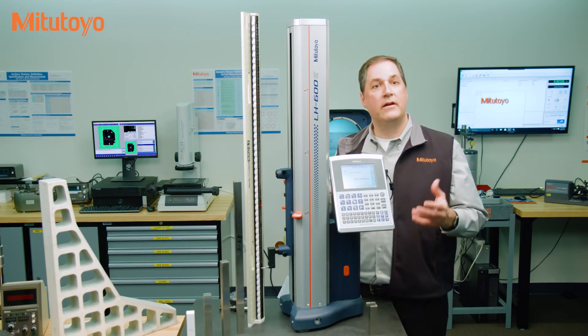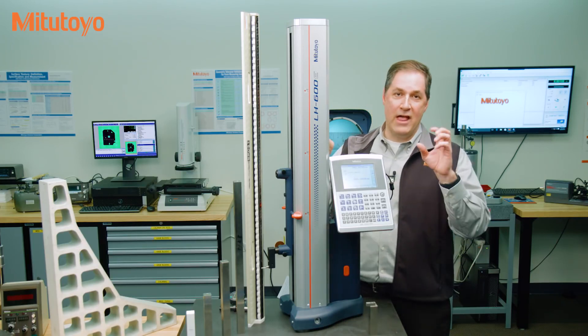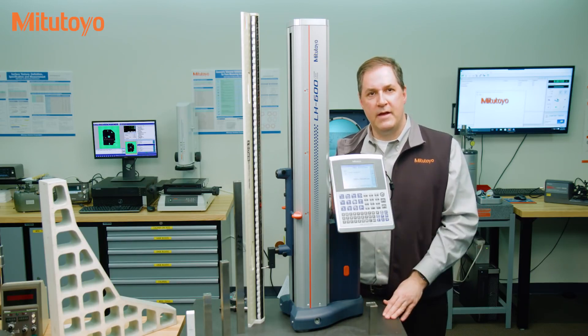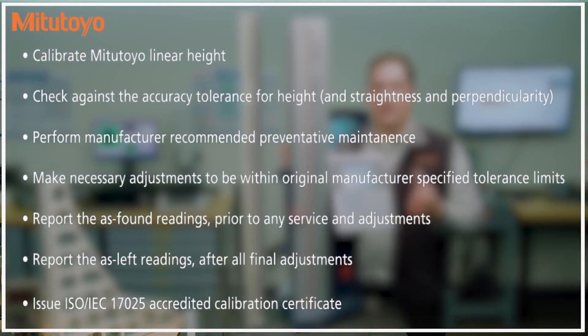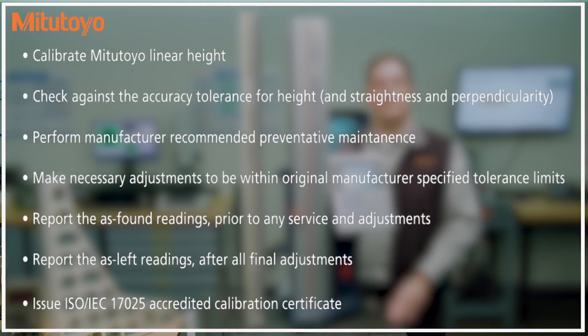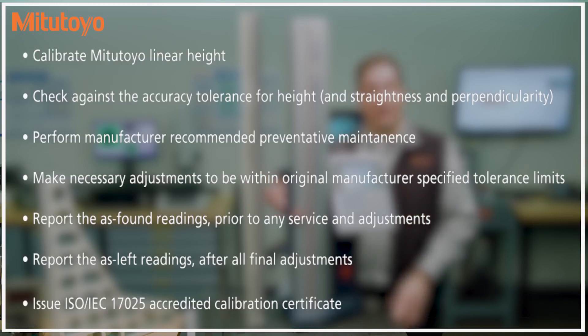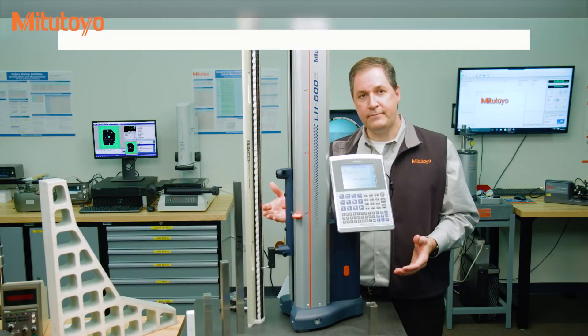If you are hiring somebody to do a calibration, protect yourself by being clear in your purchase orders. Don't just say, calibrate this gauge. As we often see in this business, instead, be more specific. Say something like, calibrate a Mitutoyo linear height. Check against the accuracy tolerance for height, and straightness and perpendicularity if you need that. Perform manufacturer recommended preventive maintenance. Make necessary adjustments to be within original manufacturer specified tolerance limits. Report the as-found readings prior to any service and adjustment. And then report the as-left readings after all the final adjustments. And finally issue an ISO IEC 17-025 accredited calibration certificate.